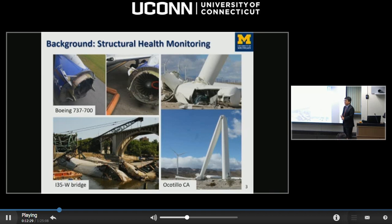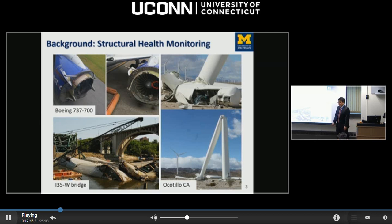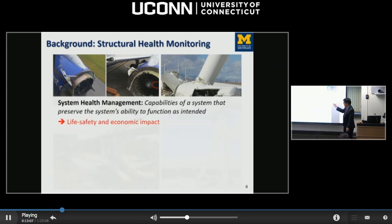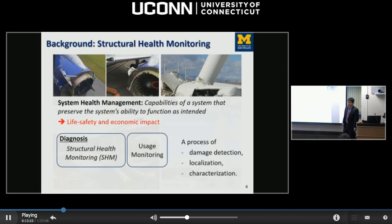Let me start with some background information. The figures here show some recent catastrophic failures in structural systems. For example, the top left shows an uncontained engine failure of a Boeing 737 that happened in Atlanta last summer. This is a collapse of a bridge on I-35 West in Minnesota that occurred in 2007. And here shows a structural failure of a wind turbine in California. These figures clearly show there is a great need for advancing system health management technology, which is directly connected to our safety and economic benefits. System health management starts with damage diagnosis using structural health monitoring techniques.